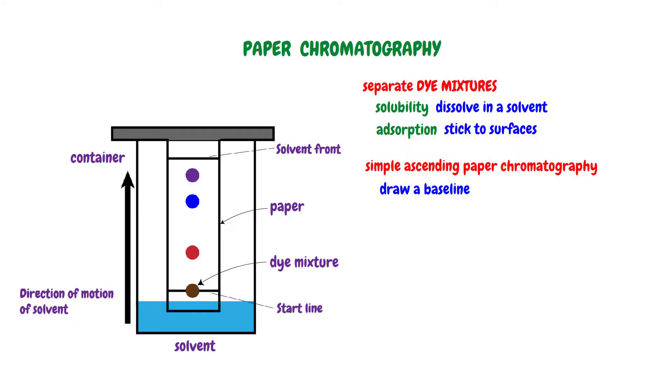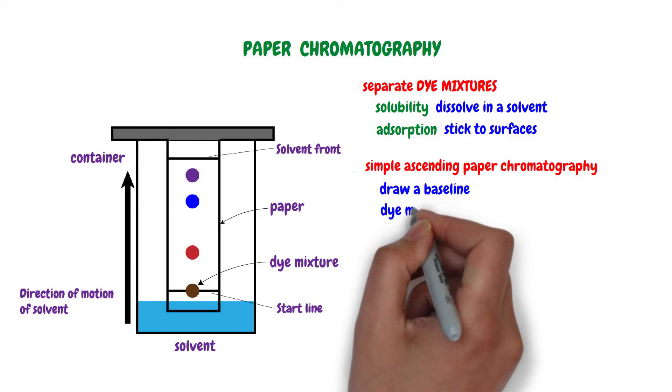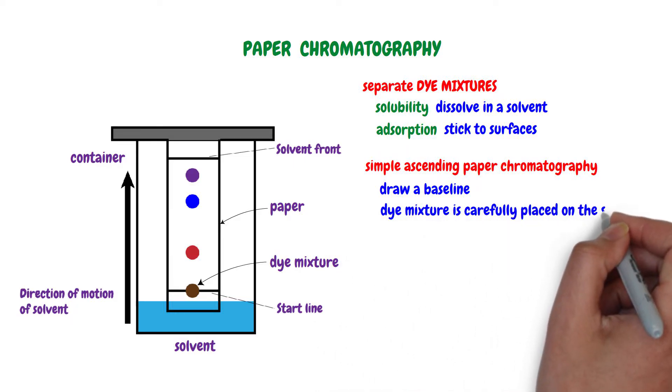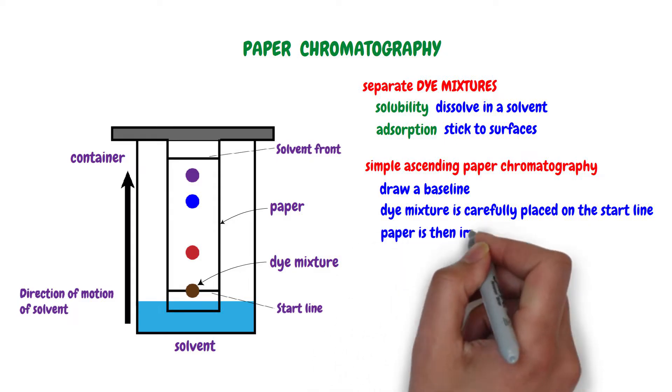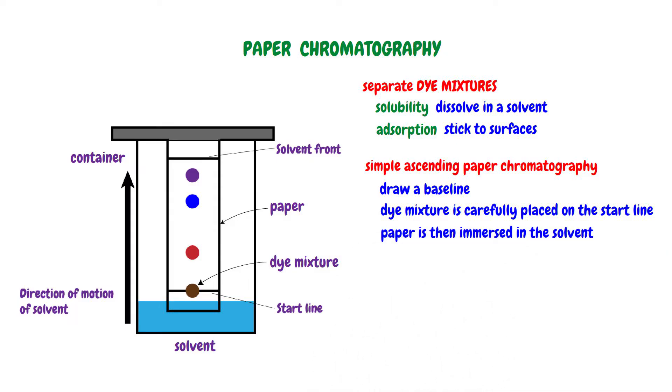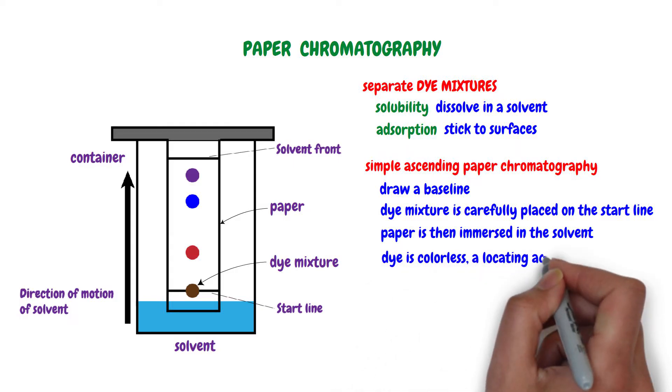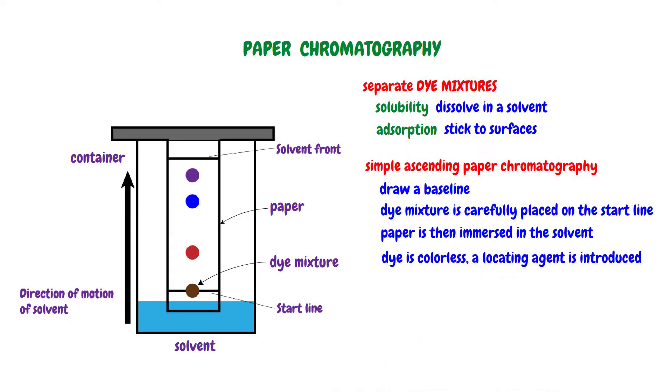To initiate the separation, a sample of the dye mixture is carefully placed on the start line. The paper is then immersed in the solvent and covered to prevent dye evaporation. In cases where the dye is colorless, a locating agent is introduced, reacting with the dye to produce visible colored spots.